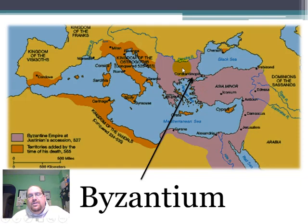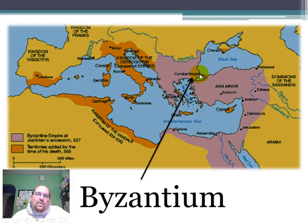This is a huge trade advantage for the region because anything coming out of Asia would need to go through Constantinople to get into Europe. Otherwise it would have to go all the way around the Black Sea or through the Mediterranean Sea. This made it much easier with these trade routes being right here at this little peninsula — actually, it's an isthmus. We'll talk more about this later on as well.